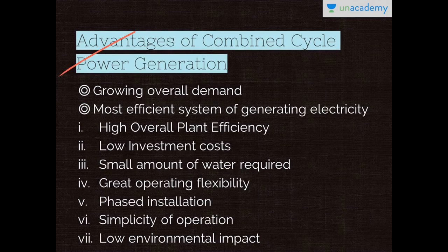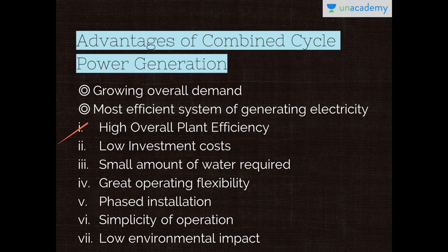Moving on to the advantages of combined cycle power generation. The worldwide demand for combined cycle power plants is growing dramatically, with some experts forecasting explosive growth over the next decade. The high overall plant efficiency — efficiencies exceeding 50% can be attained. Low investment costs: two-thirds of the output is produced in a gas turbine and only one-third in a steam turbine, so investment costs are approximately 30% less than for a conventional steam power plant. Small amount of water required: the cooling water required is only about 40 to 50% as much as for a steam plant.